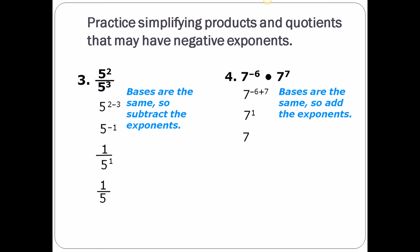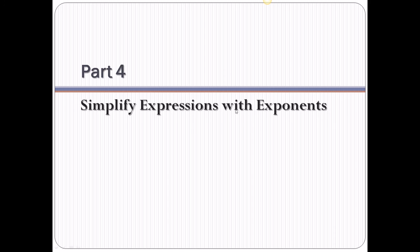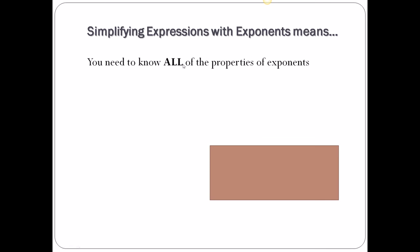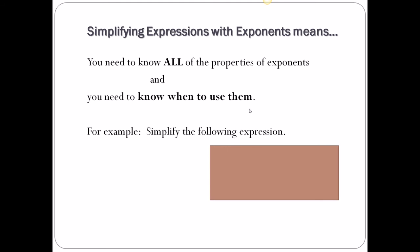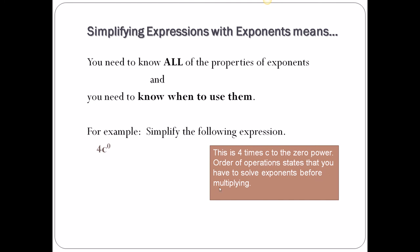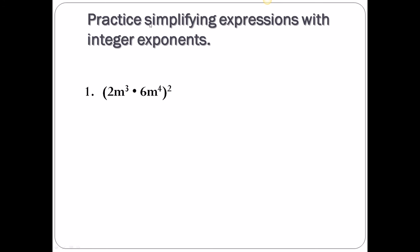That's the end of Part 3 — you now know multiplication, division, and integer rules of exponents. Part 4 is simplifying expressions with exponents, which means you need to know all the properties and when to use them. For example: 4 times c to the zero power. Order of operations says solve exponents before multiplying. Anything to the zero power is 1, so we really have 4 times 1, which is 4. Even a letter to the zero power is 1.